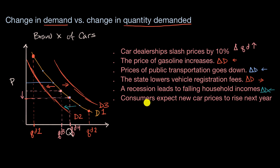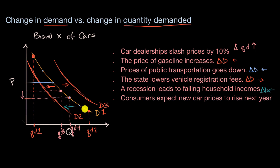Last but not least: consumers expect new car prices to rise next year. Is that a change in demand or a change in quantity demanded? This applies regardless of where we happen to sit on the curve at a given moment. If people expect prices to increase — say there's a bulletin that car prices are going to double next year — then wherever we are on the curve, people are going to say, 'I better buy more car right now.' So our entire demand curve is going to shift to the right. It's a change in the entire demand curve, going to the right.